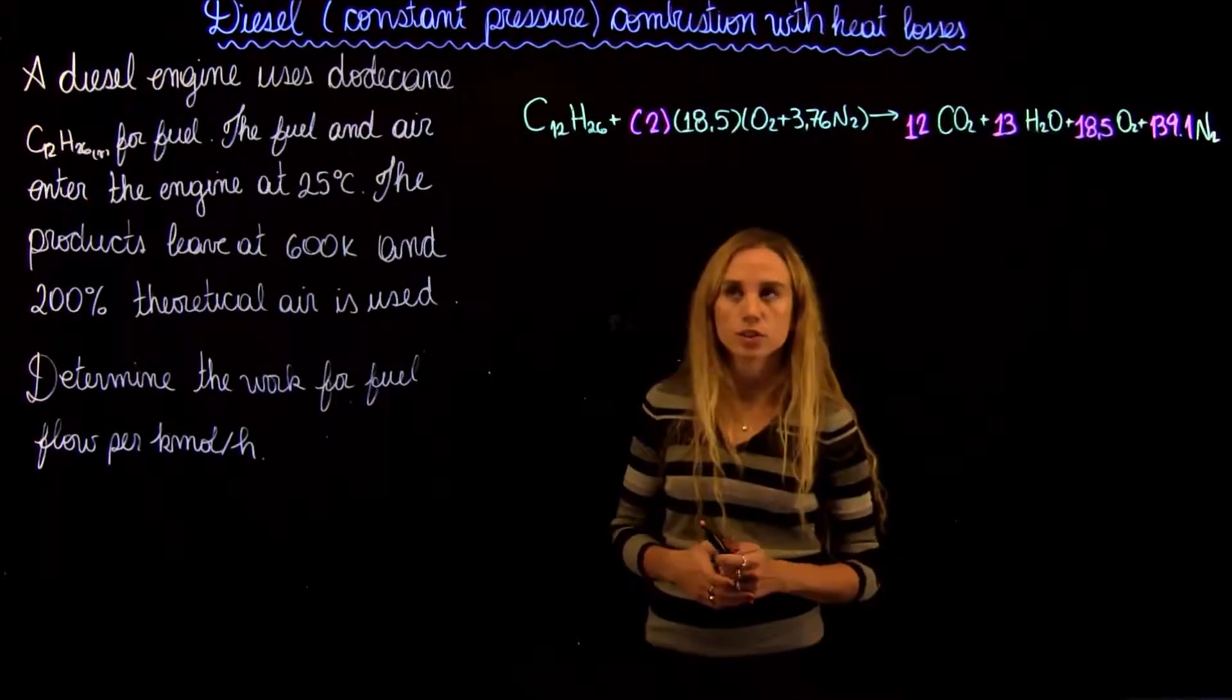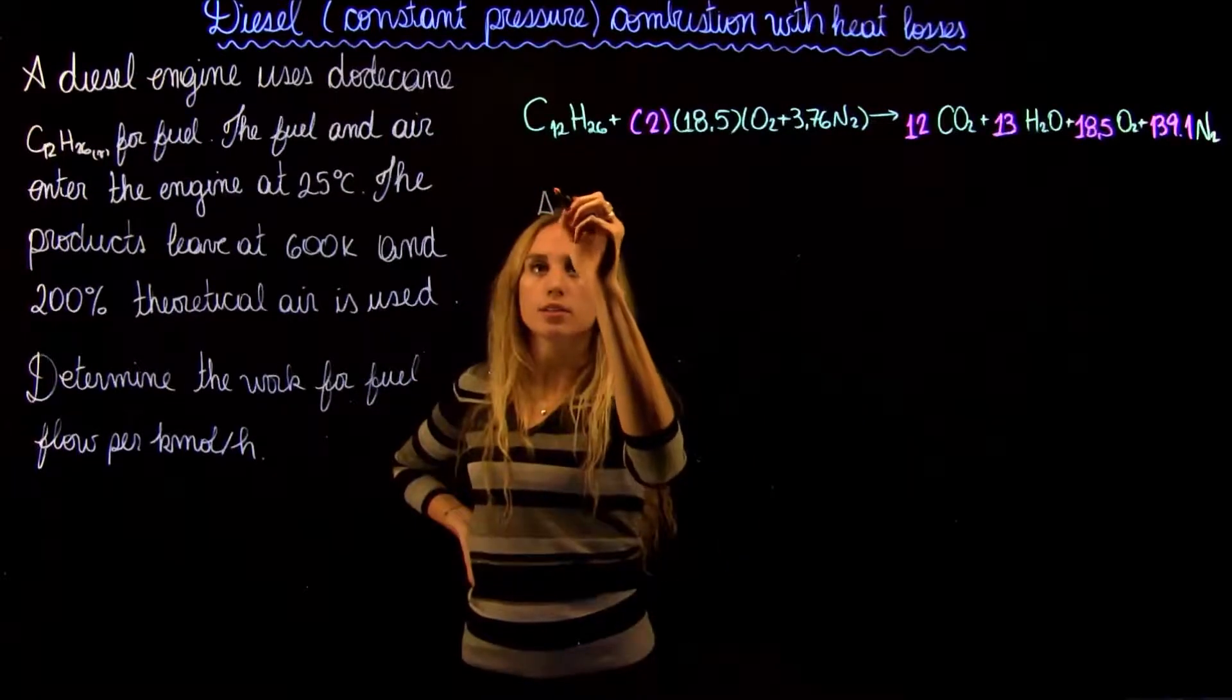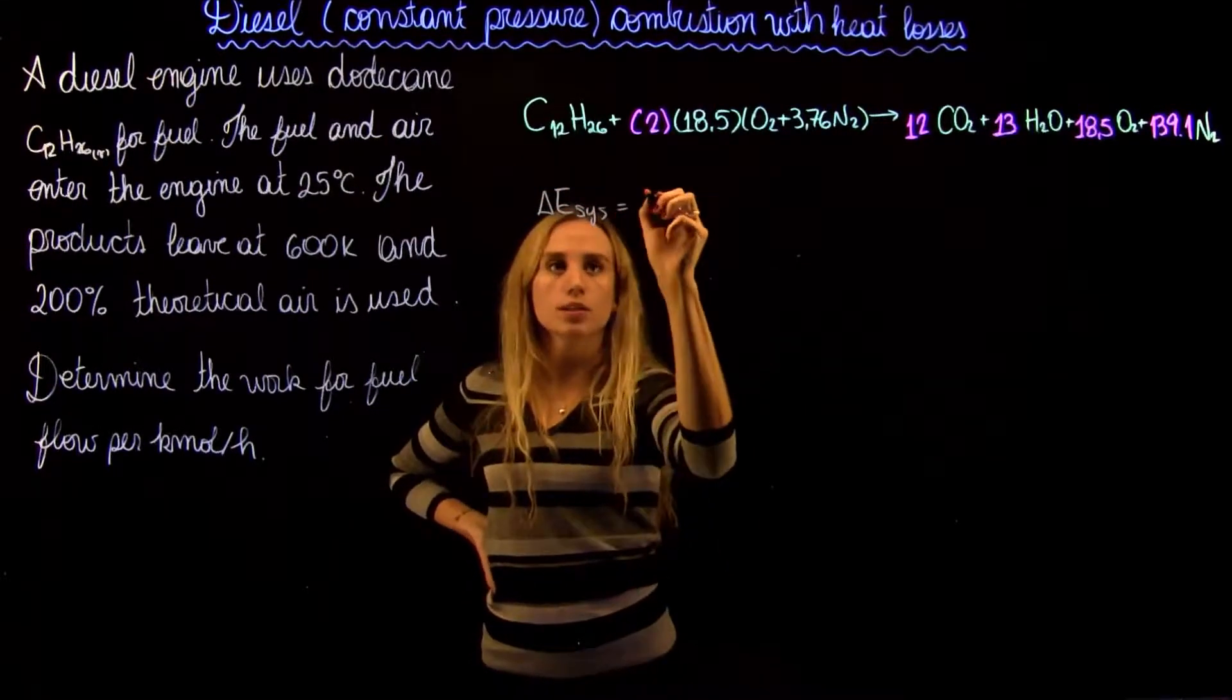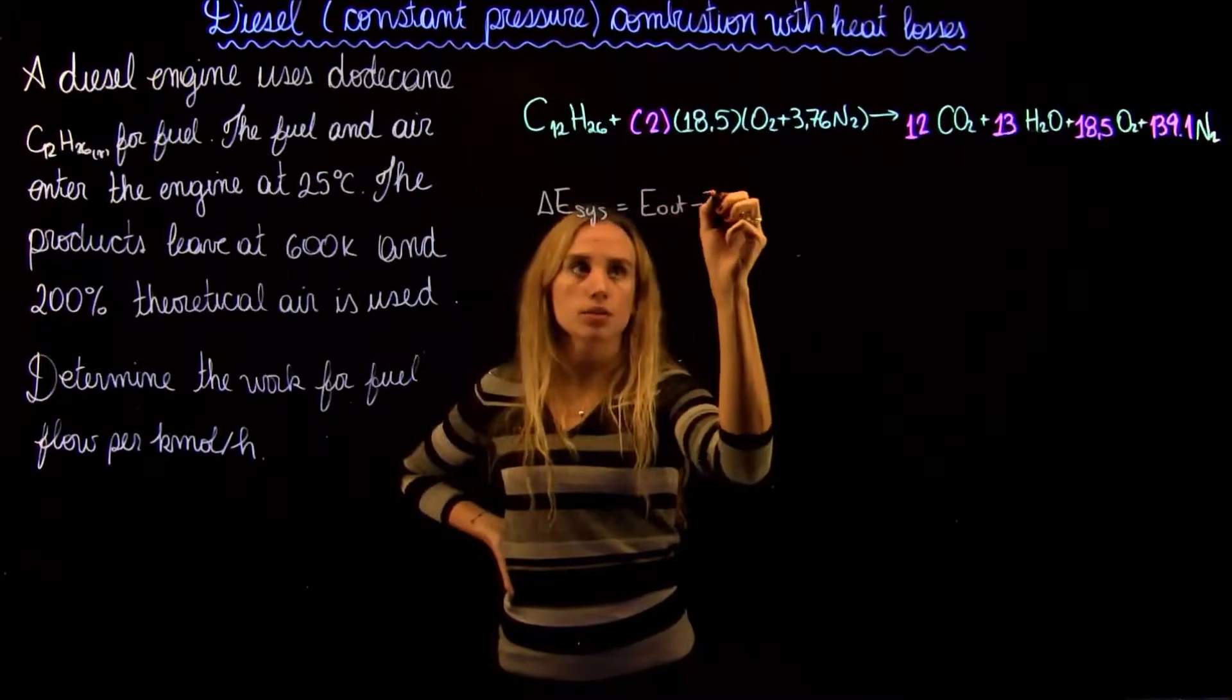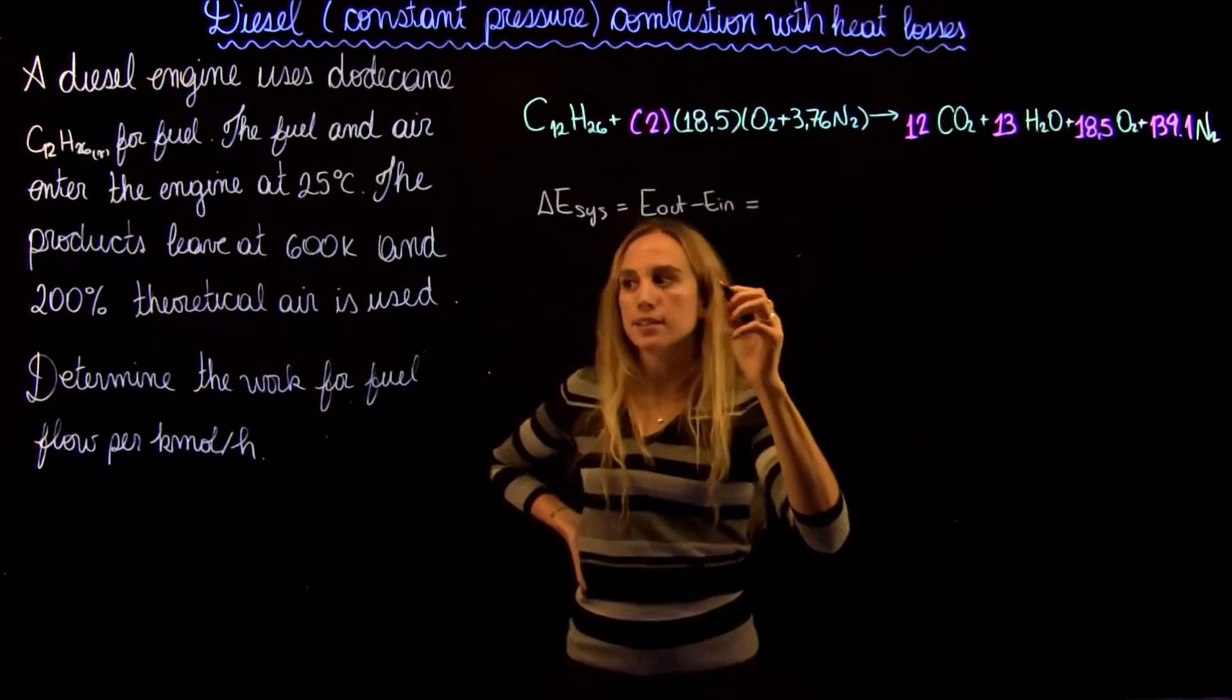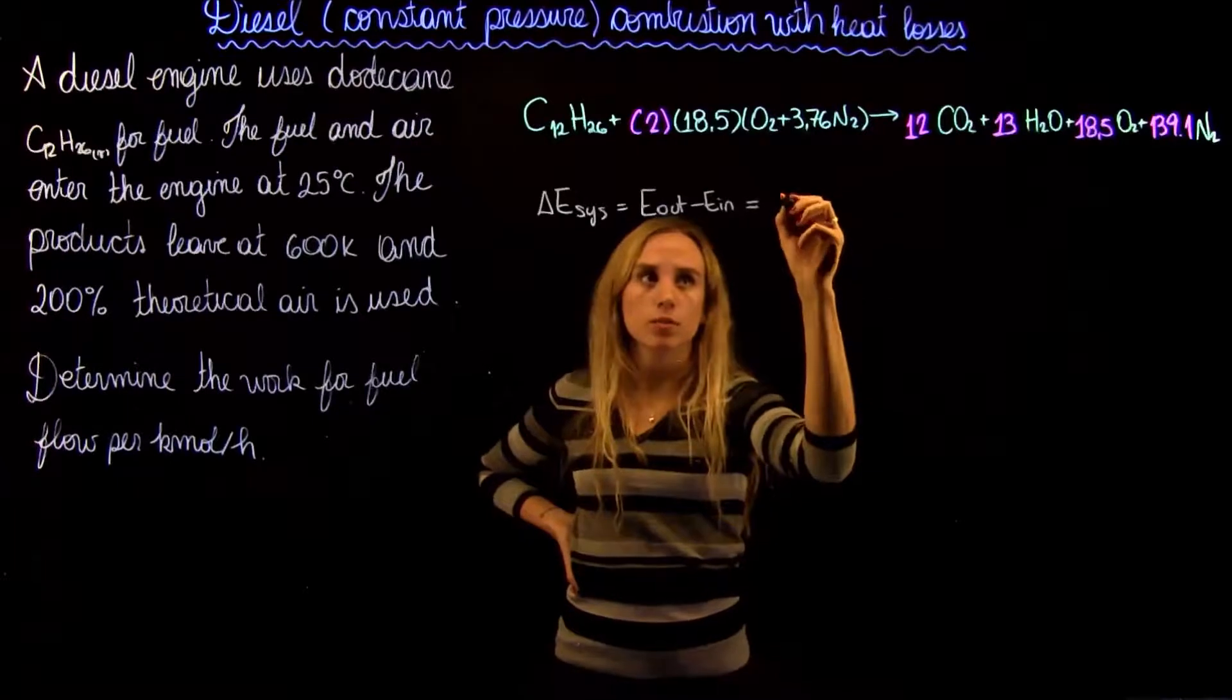So now we can write the energy balance. We know that the change in energy of a system is going to be equal to the energy out minus the energy in. And in this case, because it's steady flow, we know it's going to be equal to zero.